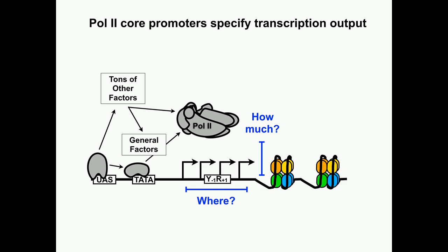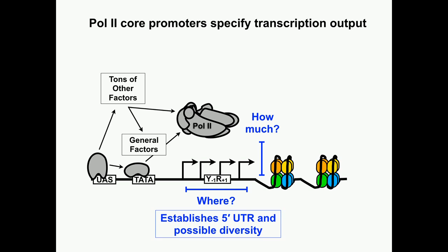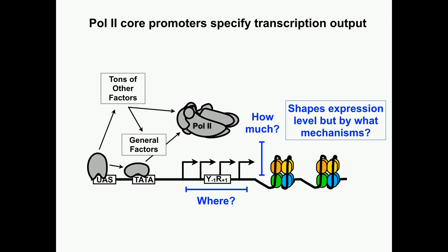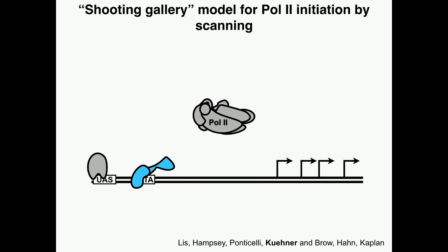If you have multiple start sites for any particular gene, you're going to have some diversity in your transcript — diversity in your UTR lengths and probably diversity in the function of those different RNAs. And if you have a lowly expressed gene, in different cells you may actually have different populations of RNAs established by the probability of using any of these particular start sites. So the biochemical efficiency of initiation is going to shape expression levels, but by what mechanism? That's what we're going to talk about today.